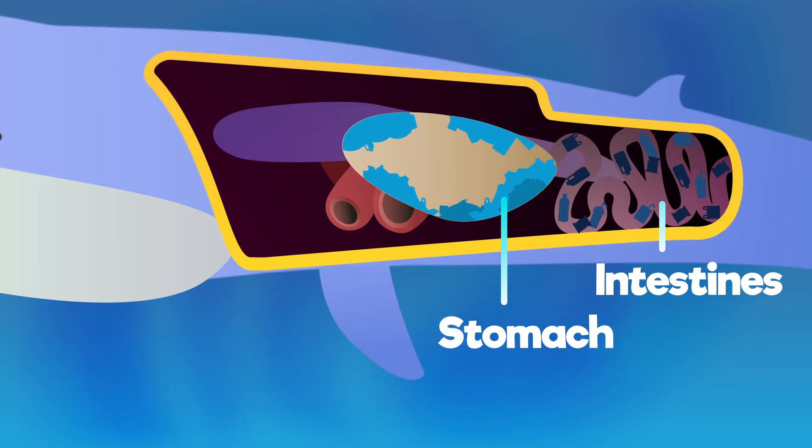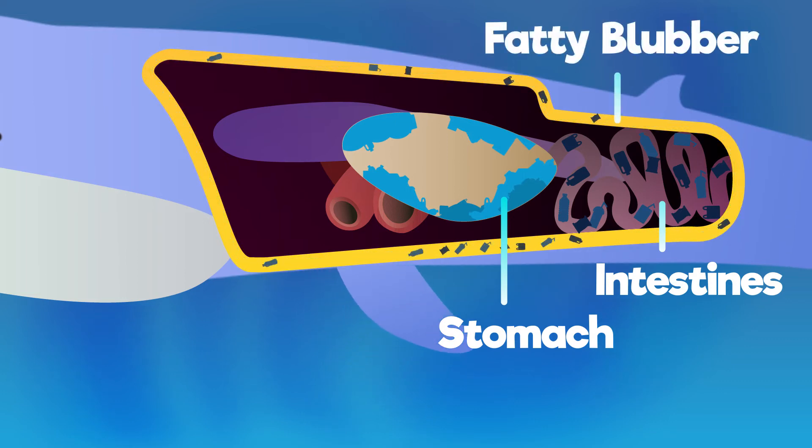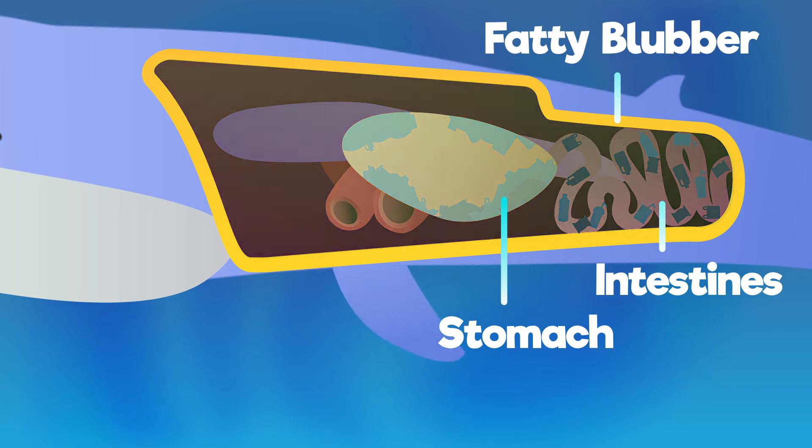Toxins in plastic then get stored in the whale's fatty blubber. Over time the whale breaks these down to release the fat stores for energy, but in doing so releases the toxins into its bloodstream. So you can see why it's really important that everyone does their part to stop plastics going into our ocean.